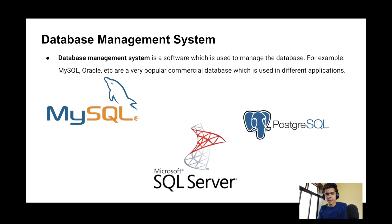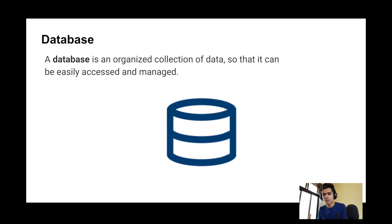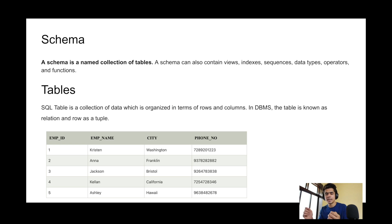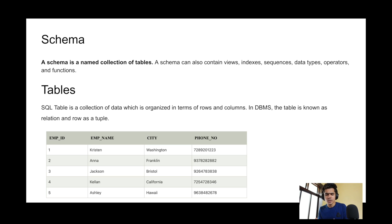Inside each DBMS we have databases — basically organized collections of data that can be accessed easily. Inside the database we might have a schema. A schema is a named collection of tables. For example, if your company is called XYZ, you create a database for that company, and inside it you create separate schemas for different departments: HR, Accounting, Finance, IT. Each schema segregates those departments so you can easily understand which tables belong to which department.